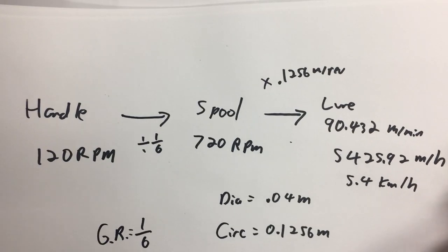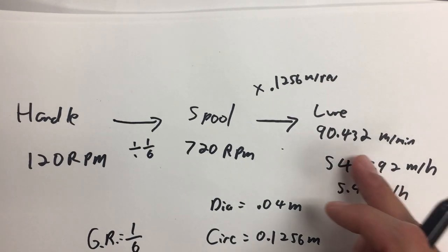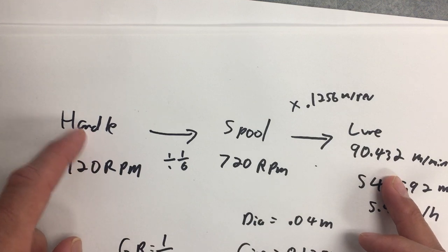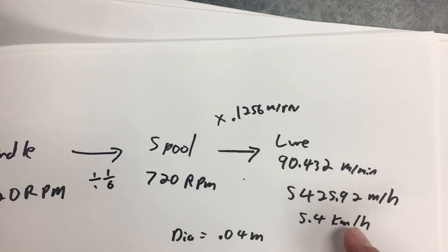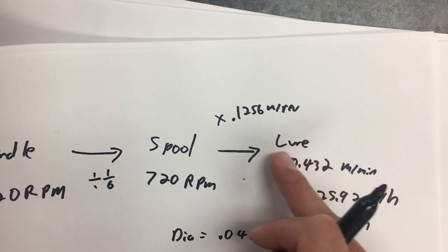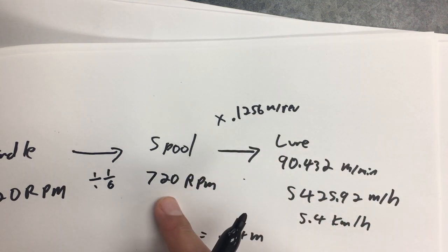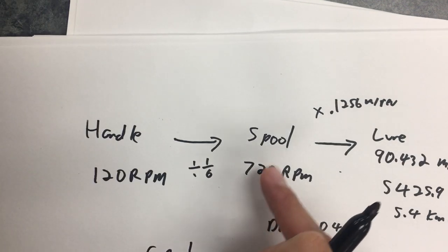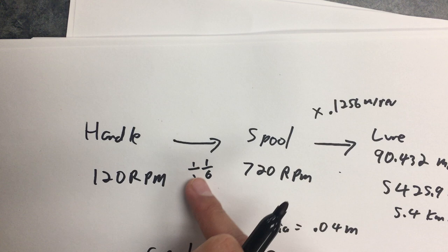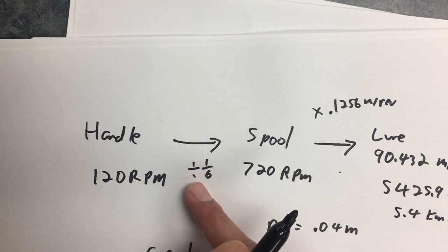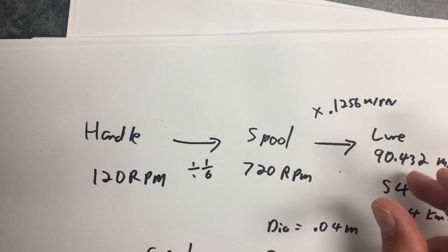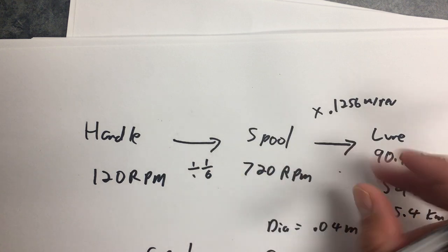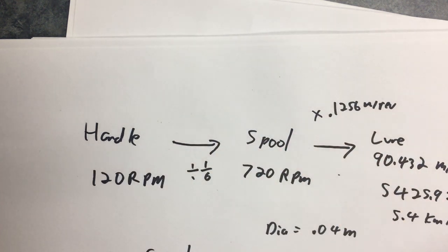If you're asked to solve this in reverse — for example, given the speed of the lure and asked to find the RPMs on the handle — just work backwards across the steps. Divide by the circumference to get RPMs on the spool, then multiply by the gear ratio to get RPMs on the handle. Wherever you multiplied going forward, divide going back, and vice versa. This lets you answer these questions in either direction.